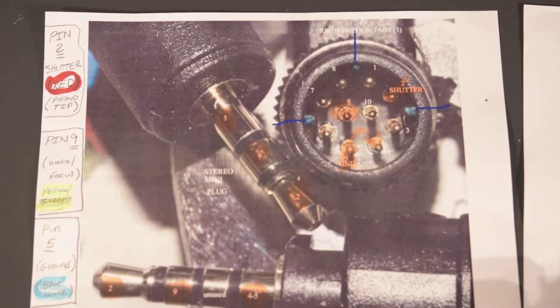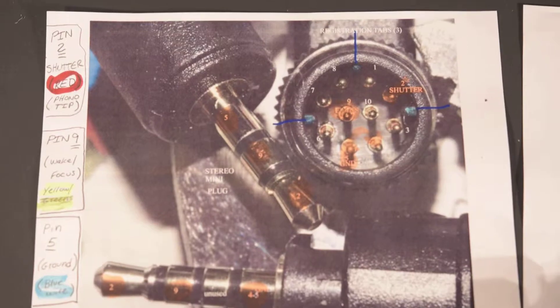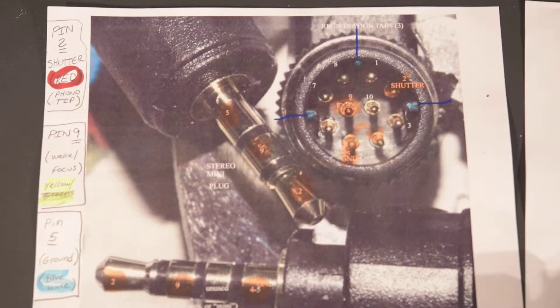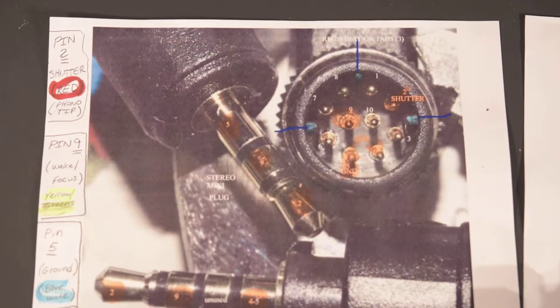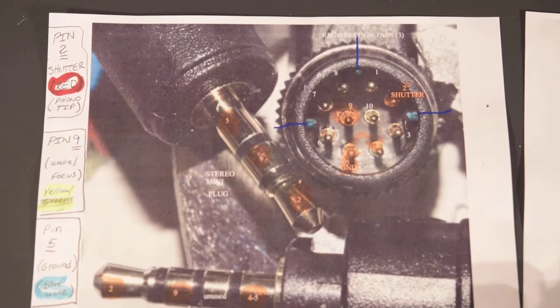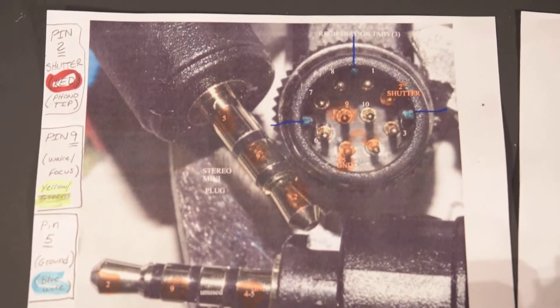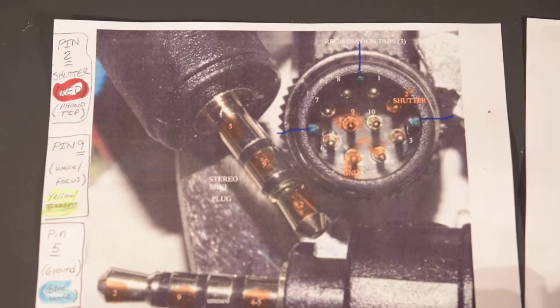If you're looking at the three registration notches that are on the barrel there, you'll see that starting clockwise from the top on the one o'clock position you have a pin, pin number two. The next one is the one that is the actually it's the shutter.